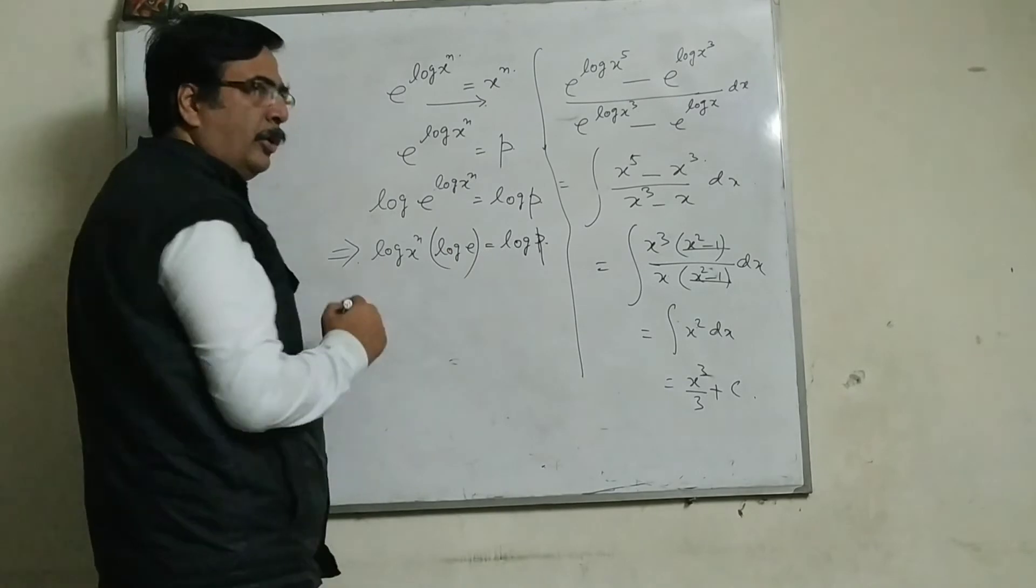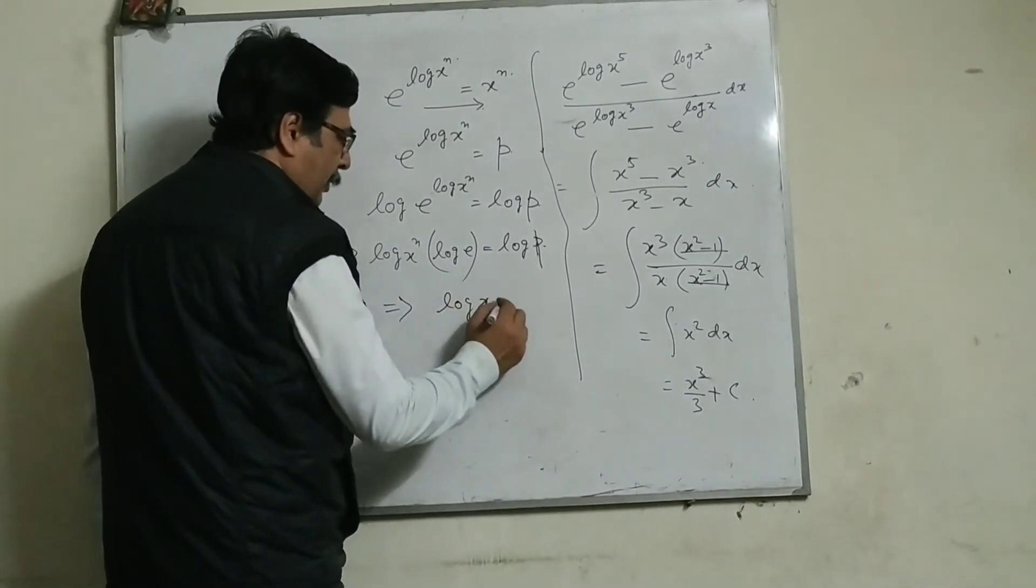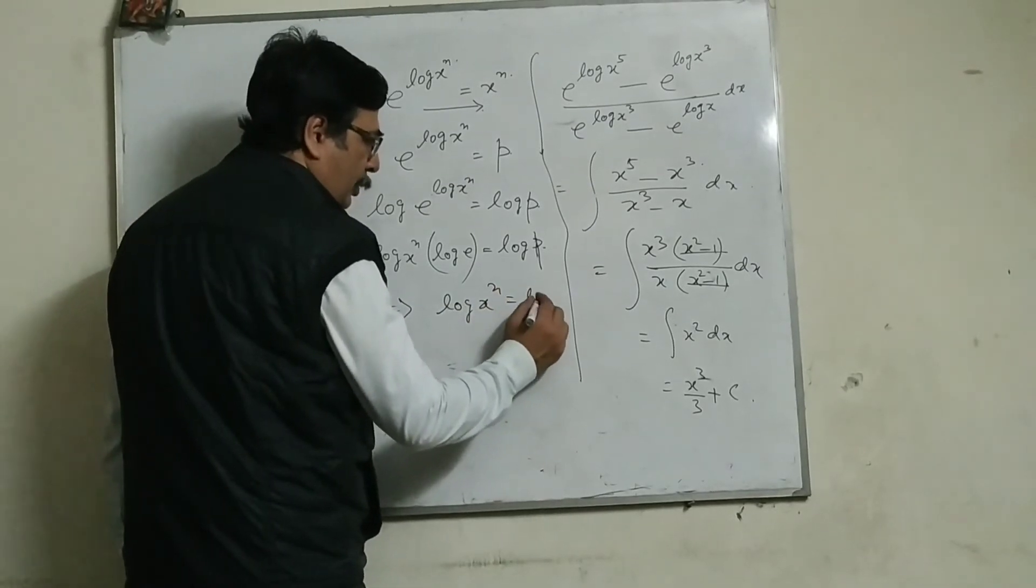Now, log e, we know log e is equal to 1. So we can write log of x to the power n is equal to log p.